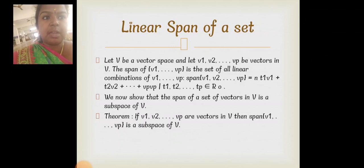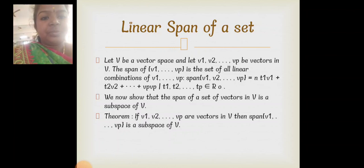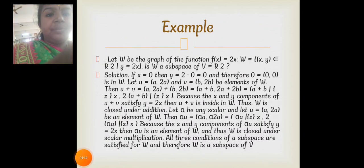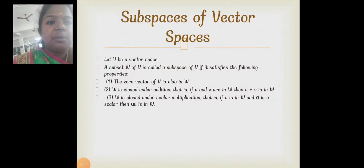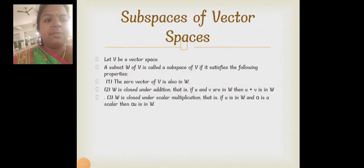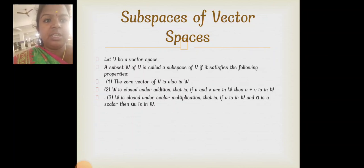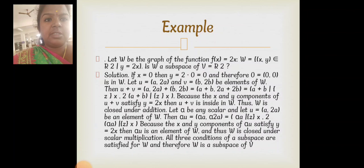Here is the definition for the linear span of a set. Let V be a vector space. A subset W of V is called a subspace if the zero vector is in W, W is closed under addition, and W is closed under scalar multiplication. There is also another example for the linear span set.